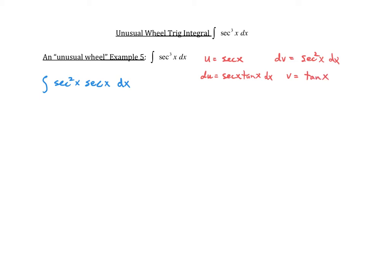When we apply the integration by parts formula, we get uv minus the integral of v du, which is secant x tangent x minus the integral of tangent x times secant x tangent x dx.